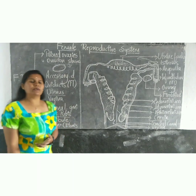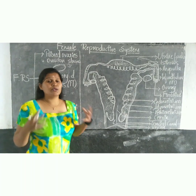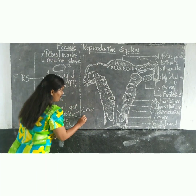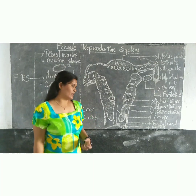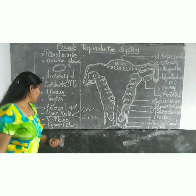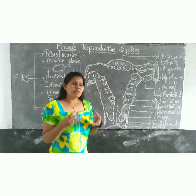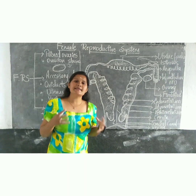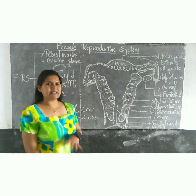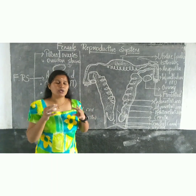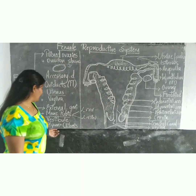The external genitalia includes the mons pubis, which consists of fatty tissues associated with pubic hair. Above the urethral opening there is a sensitive smooth tissue called the clitoris. The hymen is a membrane that covers the opening of the vagina.